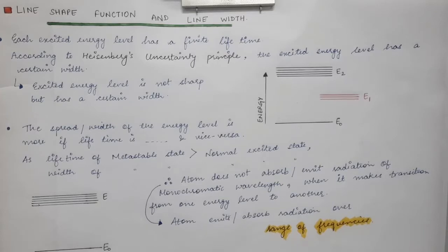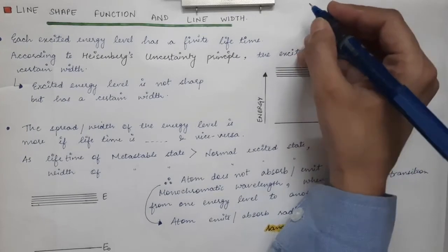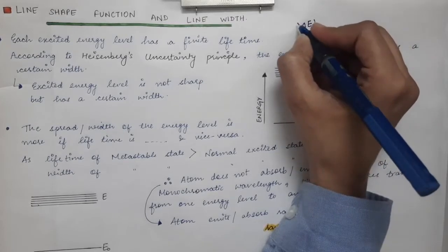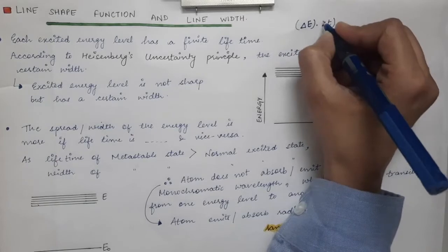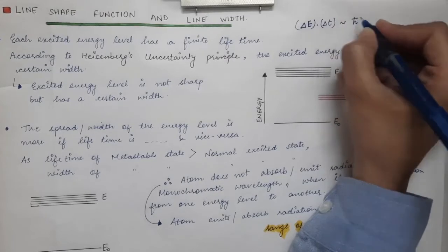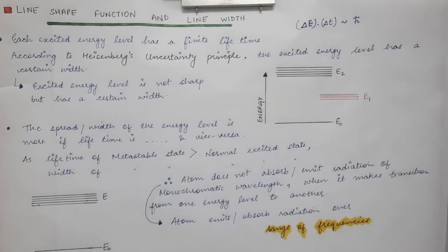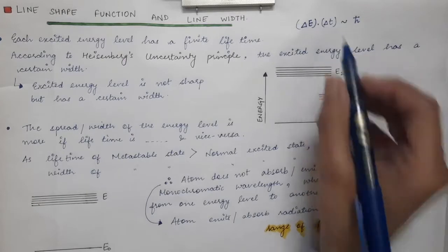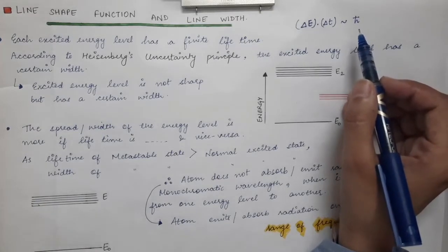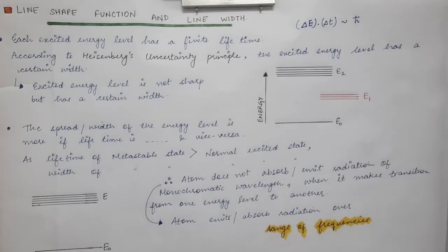Since every excited state has a certain lifetime, according to Heisenberg's uncertainty principle, the uncertainty in energy times the uncertainty in time is of the order of ℏ. So ΔE times Δt is of the order of ℏ, where ℏ is h divided by 2π and h is Planck's constant.